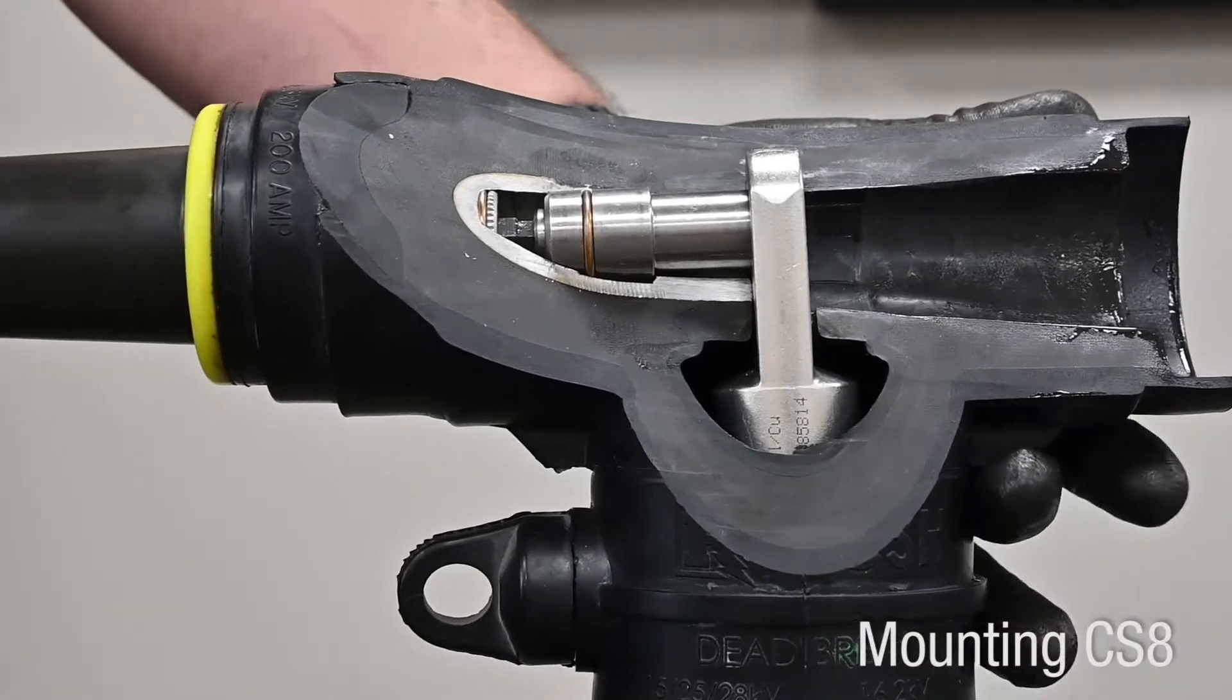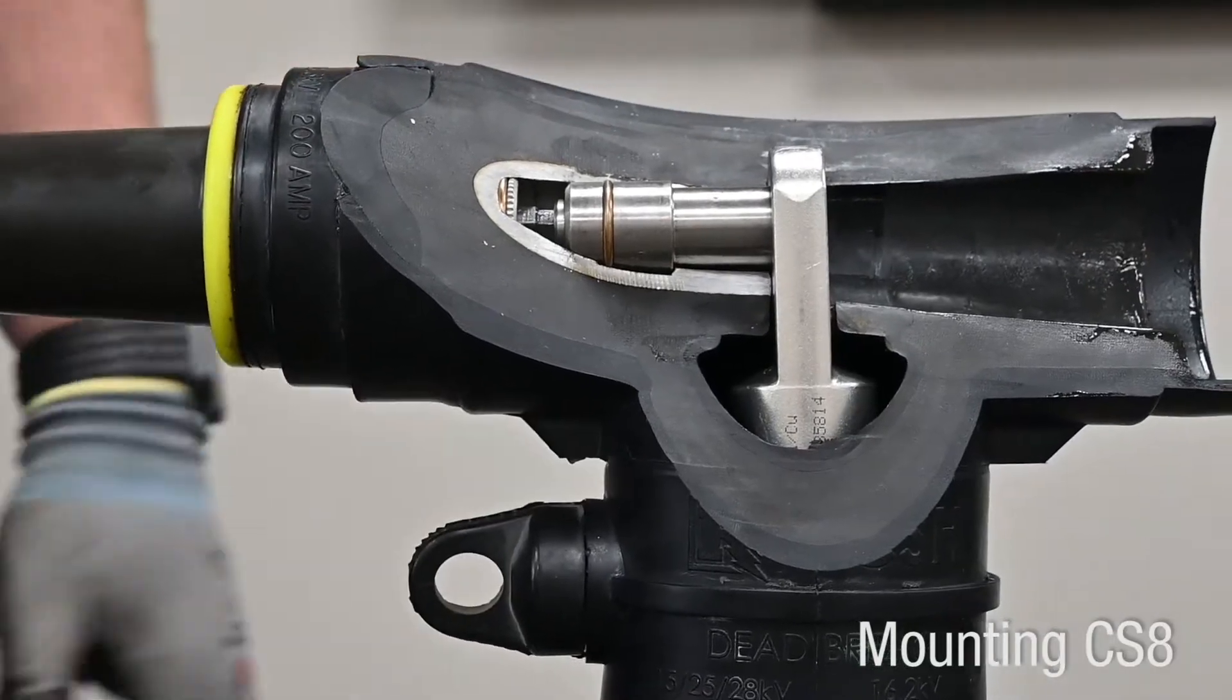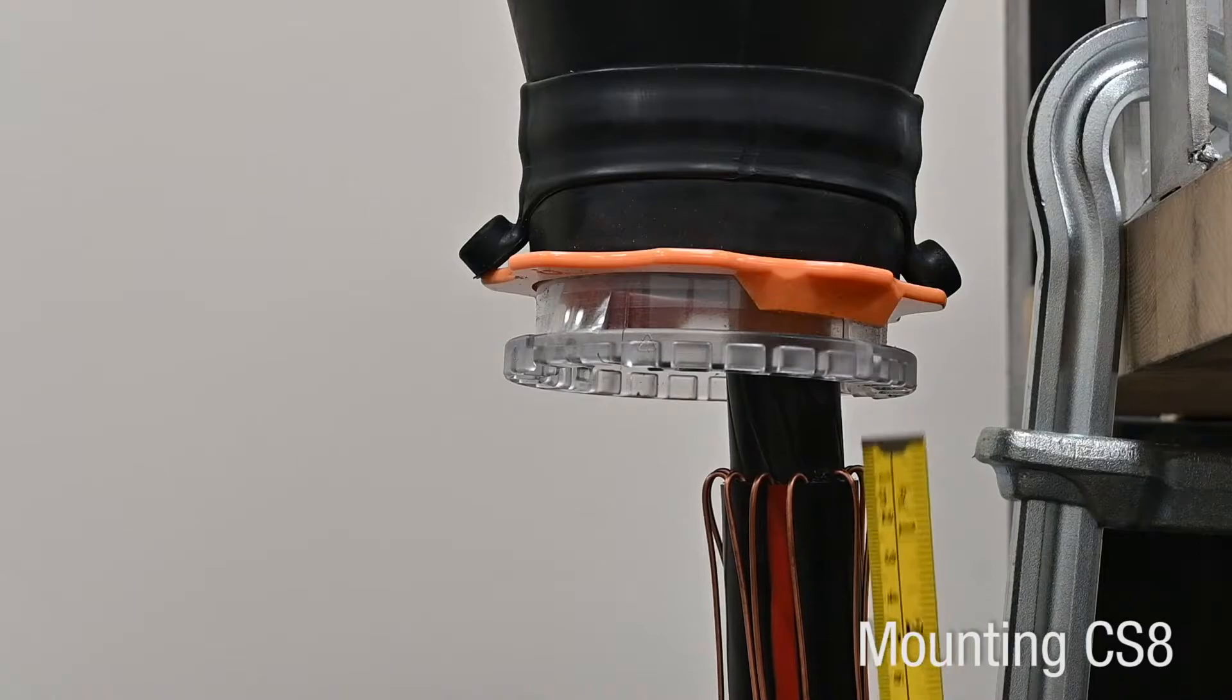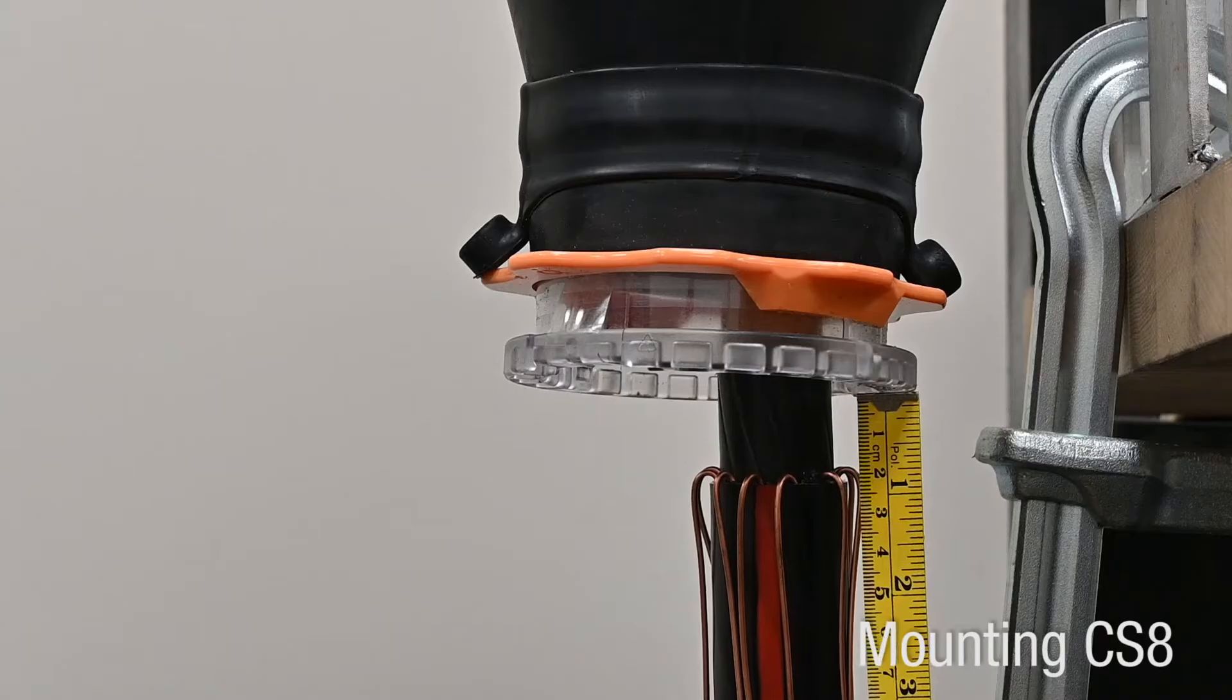Lift up on the CS8 body to confirm that the assembly is locked with the fastener through the lug hole. Measure distance from the edge of the core to the jacket cutback. Note the measured distance. This will confirm correct positioning after mounting.